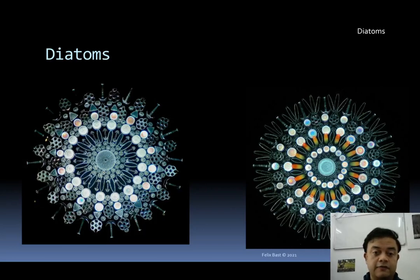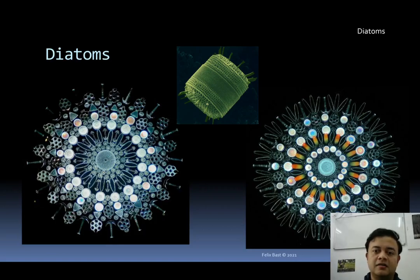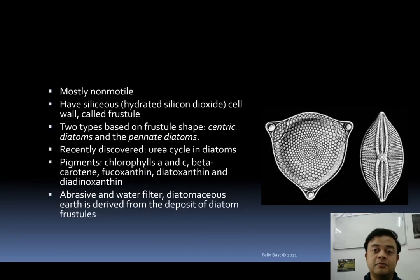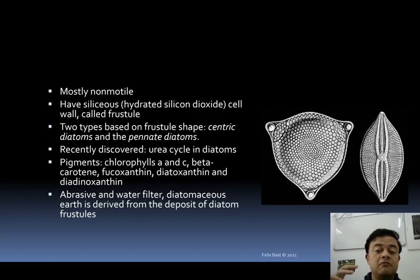There are various kinds of diatoms, and they are easily the most beautiful creatures — especially among plants. As I mentioned, it's structured like a petri dish: one part is larger and one is smaller. These are the thecae. The cell wall of the diatom is known as the frustule, and it's made of silica — specifically hydrated silicon dioxide.